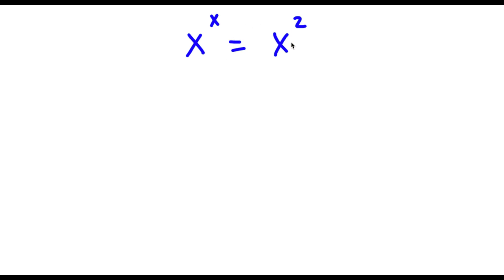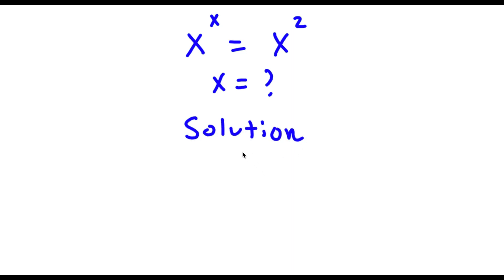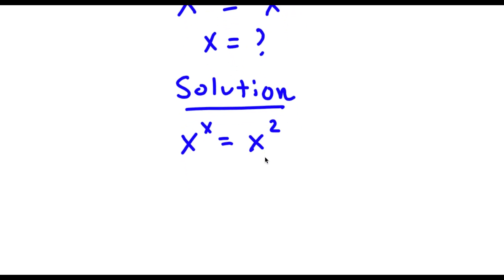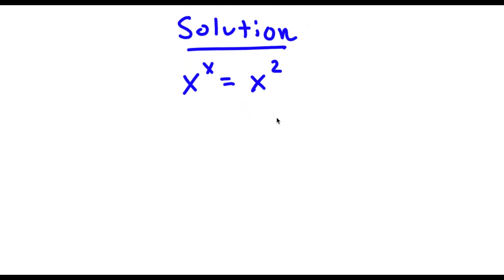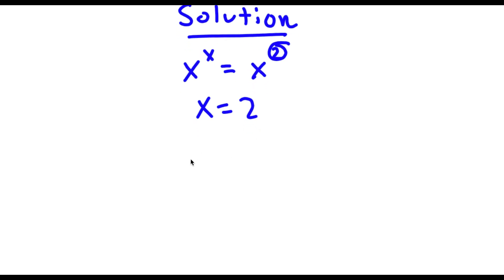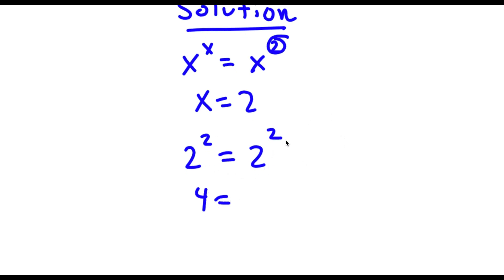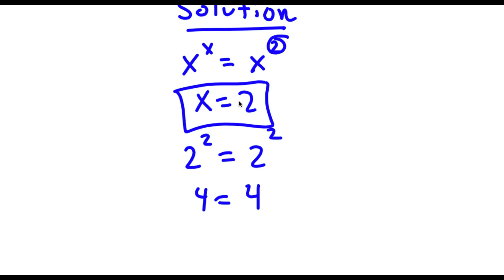Alright, so for the first bonus problem I have x to the power of x is equal to x to the power of 2, and I want to find the value of x. A very obvious solution to this would simply be 2, because if I plug it in I get 2 to the power of 2 is equal to 2 to the power of 2, which is 4 equals 4. So x equals 2 is an obvious solution, but it isn't the only solution.